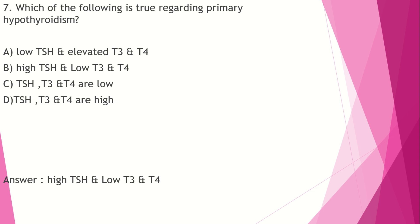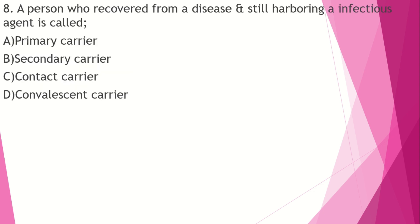In secondary hypothyroidism, TSH is low because the pituitary is affected. Now we move to the immunology section. Question on carrier types: Option A: primary carrier. Option B: secondary carrier. Option C: contact carrier. Option D: convalescent carrier.